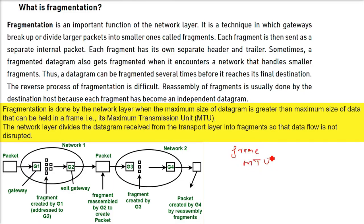So, the network layer divides the datagram received from the transport layer into fragments so that data flow is not disrupted and the network can handle it. Because if we have a bigger size, we simply drop it.